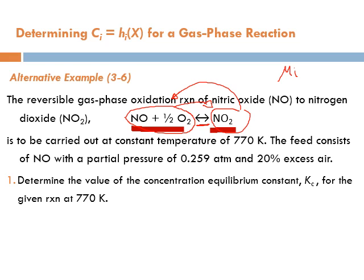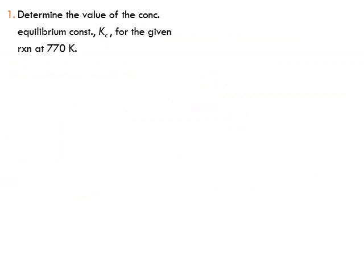What's the first requirement here? Let's determine the value of the concentration equilibrium constant, Kc, for the given reaction at 770 Kelvin. We want to calculate the value of Kc, the concentration equilibrium constant. Where does it come from? It comes from K, which is the equilibrium constant. From which subject? Yes, it comes from thermodynamics. It's related to equilibrium. Therefore, it's the business of thermodynamics.